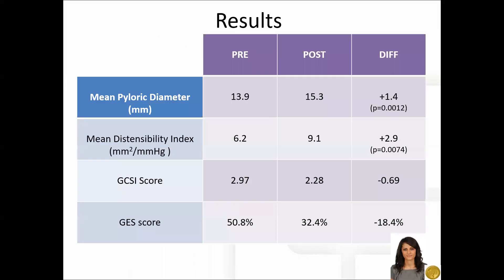The results demonstrated a statistically significant increase in mean pyloric diameter from 13.9 to 15.3 millimeters. Likewise, a statistically significant increase was noted in the mean distensibility index following the procedure. The GCSI score showed overall improvement, in addition to an improvement in the objective gastric emptying study.